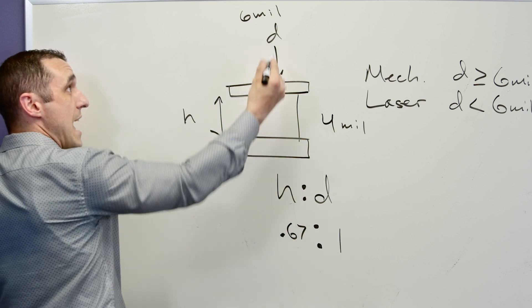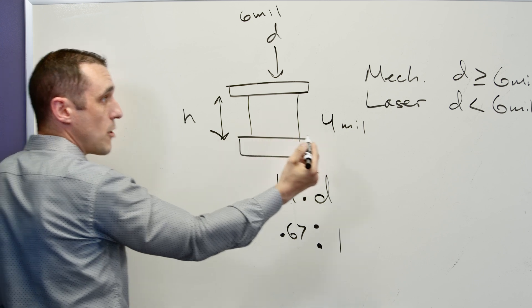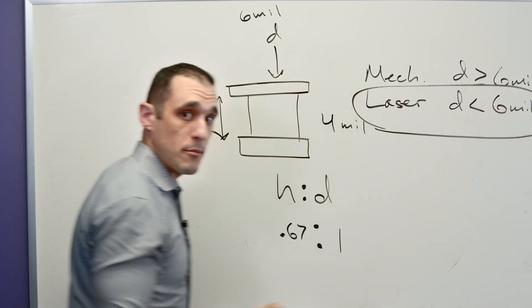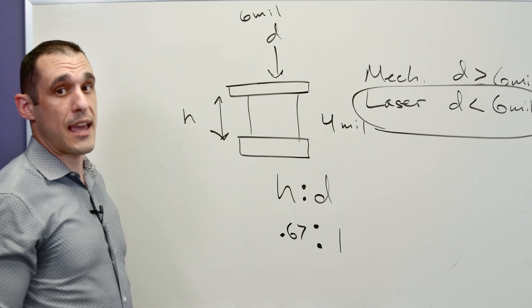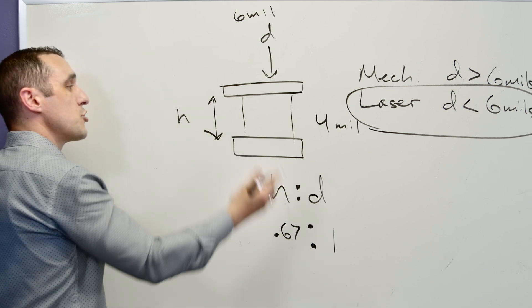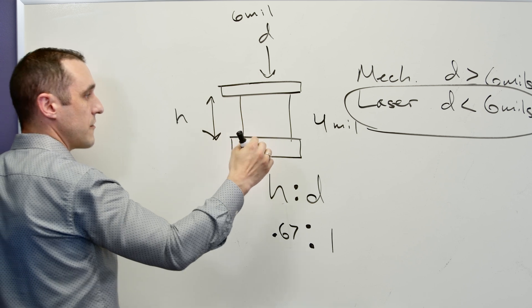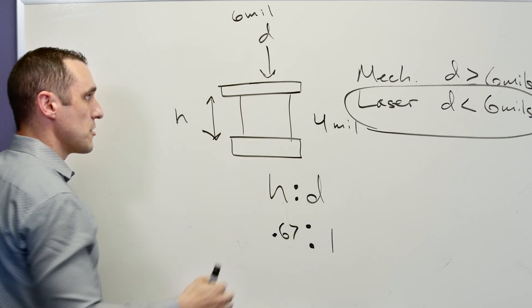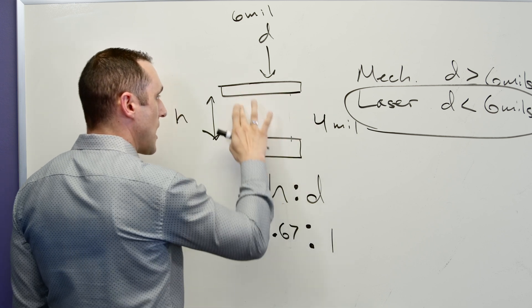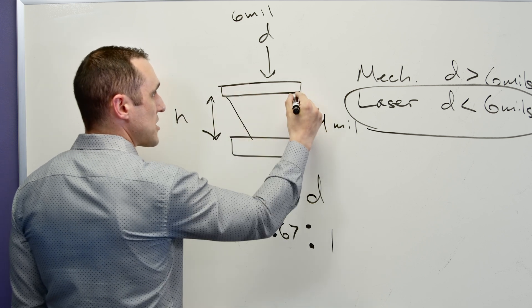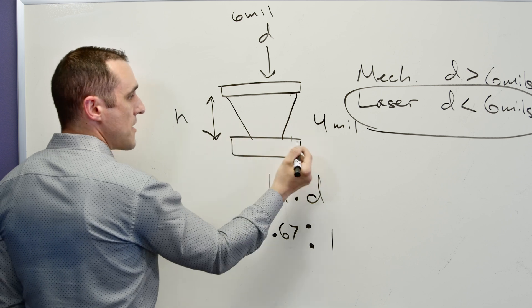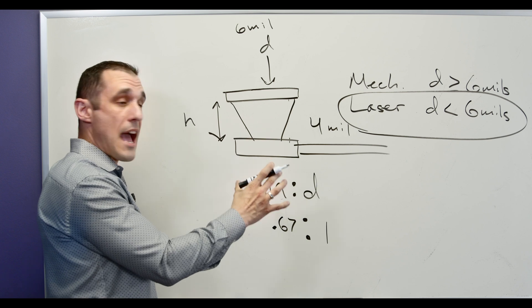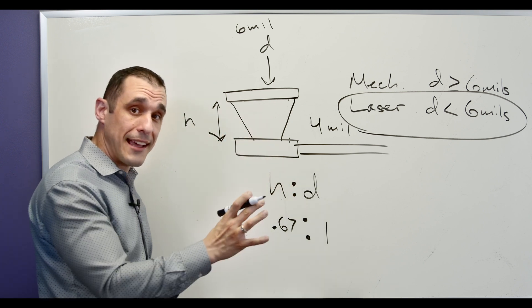Eventually, as you make the hole diameter smaller, you get into the laser drilling regime and can no longer mechanically drill those vias. When drawn out, this looks like a conventional via, but it could also be a microvia. A microvia is typically visualized as having a sloped structure, with a landing pad at the bottom and traces going off from there. Now let's look at how we can use these vias in stacks, and then we'll look at another type called a boomerang via.